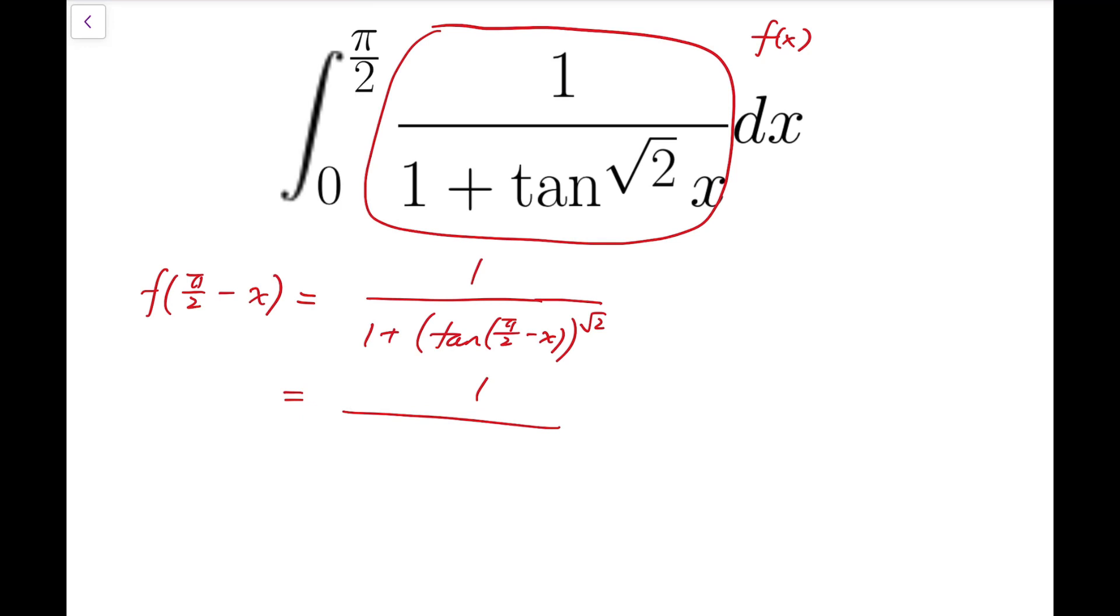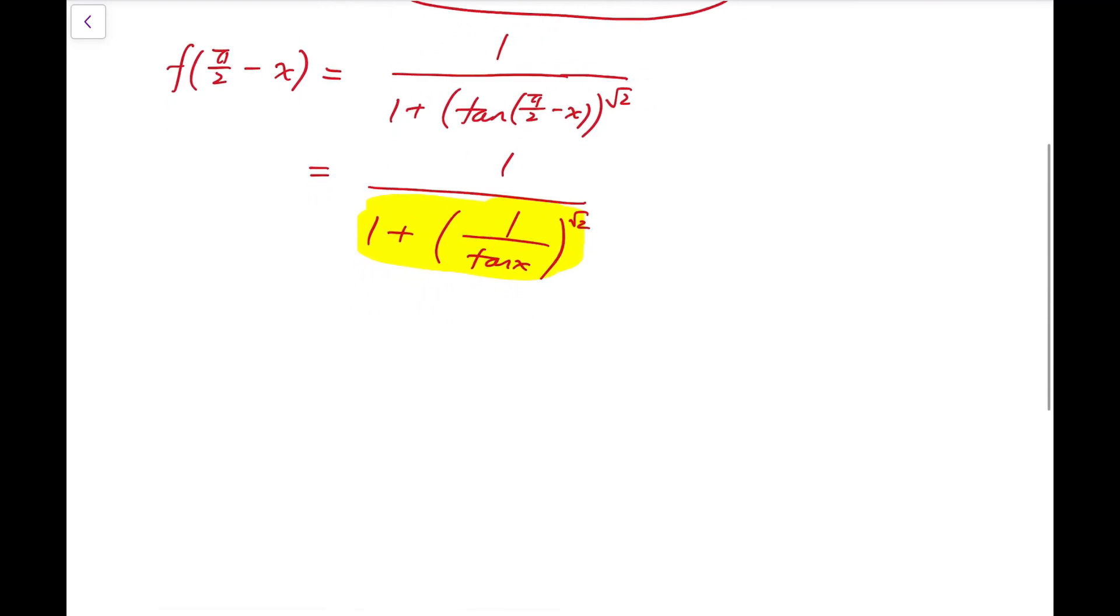And in fact tangent of pi over 2 minus x is exactly equal to 1 over tangent x, and the whole fraction is brought to the power square root of 2. Now if we take the common denominator within these two terms, after some simplification, you will see that it's equal to tangent x all to the power square root of 2, over 1 plus tangent x all to the power square root of 2.